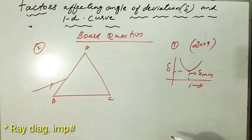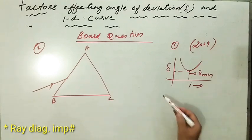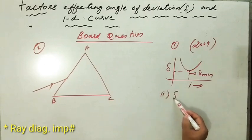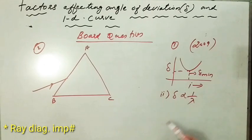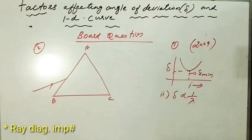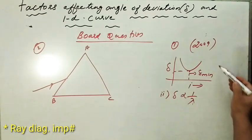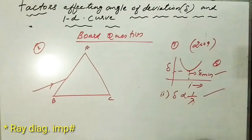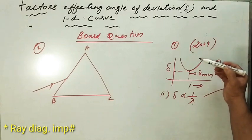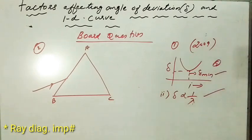The second part of the question: how does angle of deviation change with wavelength of incident light? We have already studied that when wavelength increases, angle of deviation decreases. So delta is inversely proportional to wavelength. The more the wavelength, the lesser the deviation; the lesser the wavelength, the more the deviation. This is a two-mark question.